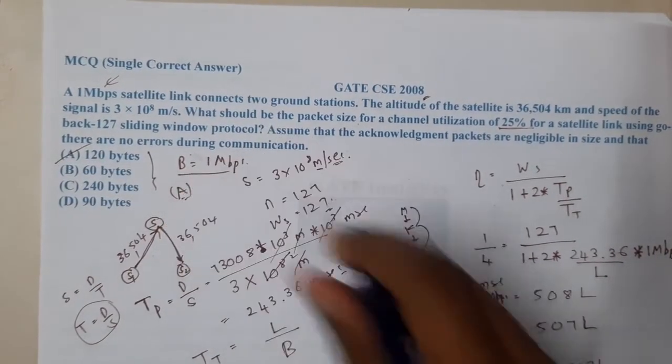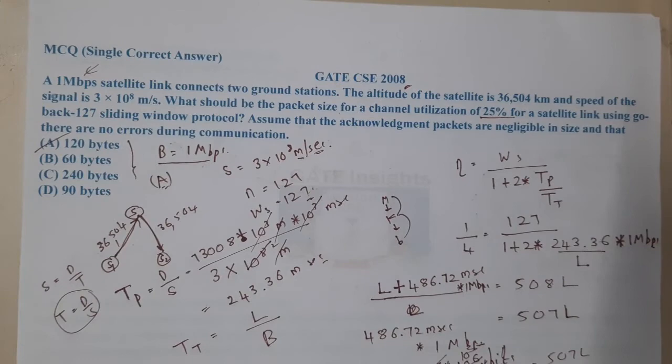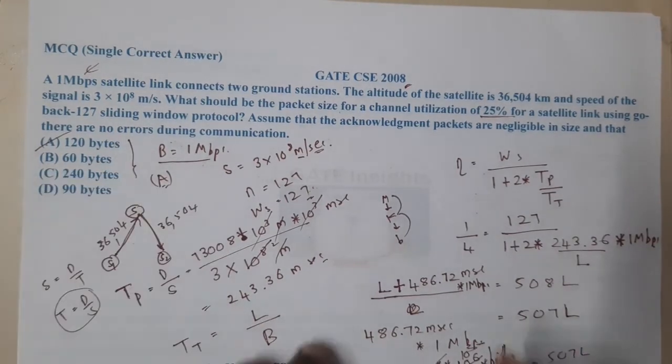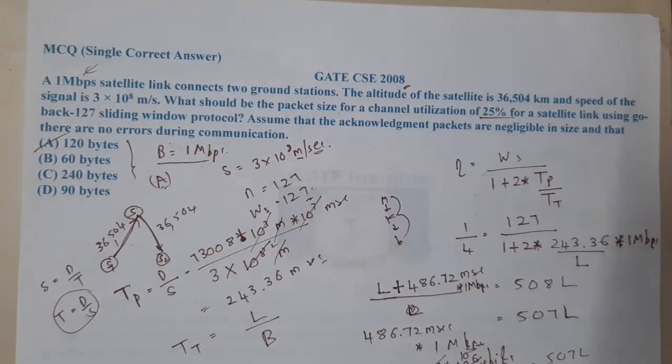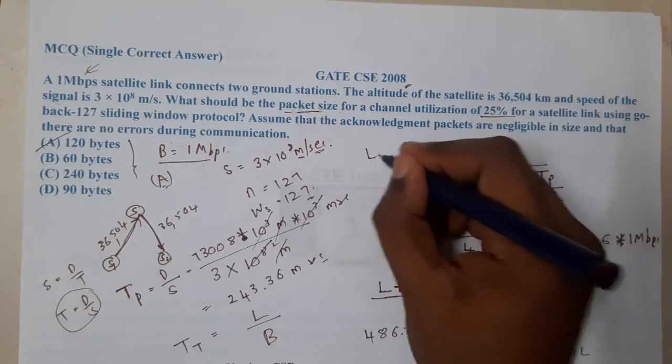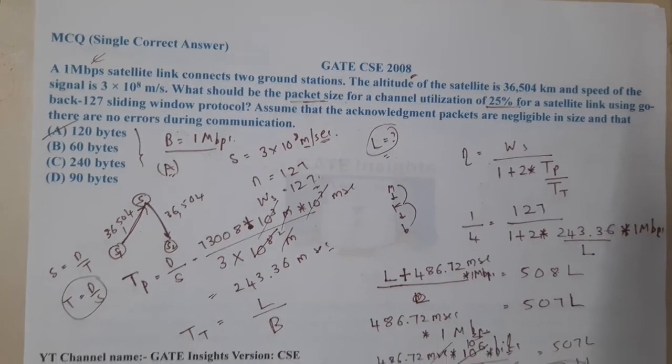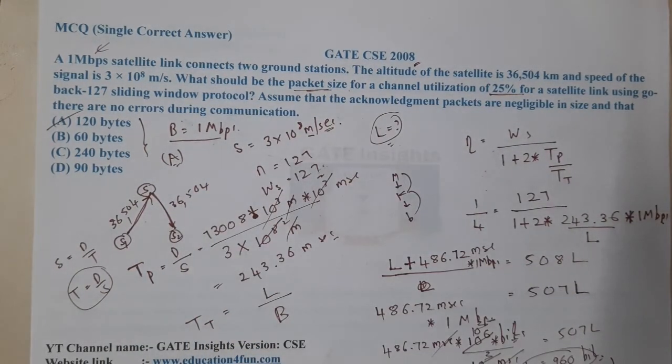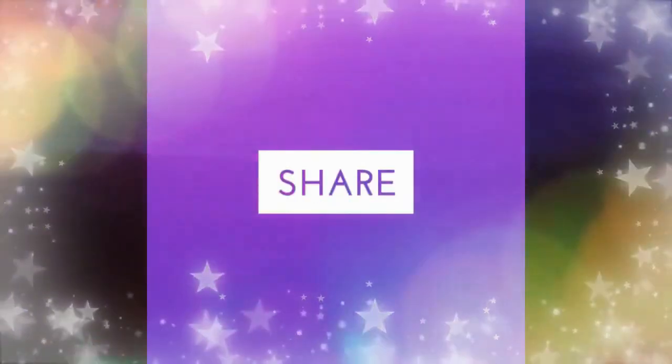These networking questions are really easy. You just need to know the formula properly and write down what they're asking. I was confused because they asked for packet size, and it took me two minutes to identify that. When you write the data, also write what you're searching for to reduce confusion. Just with the help of the formula and converting units, we solved the question. I hope everyone got a clear idea. In the next lecture, let's continue with the next question. Thank you. Like, share, and subscribe for more awesome videos like this.